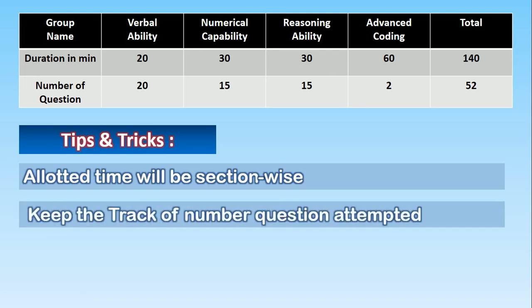Keep the track of number of questions attempted. You have to keep the track of how many questions you have attempted as of now because question number will not be mentioned there. However, this time question number may be available. But as per the past experience, question number was not available. And you have to keep the track in your mind or on any paper that you are attempting question number 14 or 15.